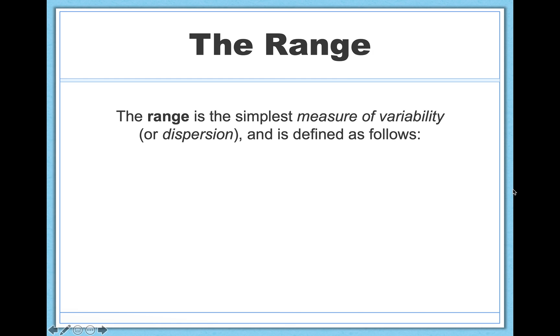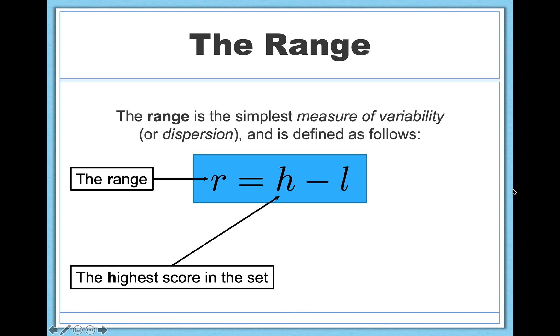The range is nice because it's a really simple measure of variability, of dispersion, of how spread out points are. It can often be calculated in five or ten seconds. Here's the formula. So we have the range, R. Don't get confused later on when we learn about correlations, which are often also described by R. We'll use some different subscripts to make that difference clear when the time comes. But for now, range is R. And then we have R equals H minus L. H means the highest score in the data set. L means the lowest score in the data set.